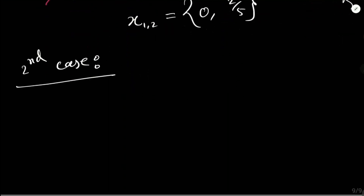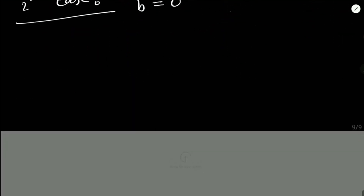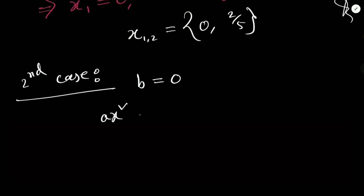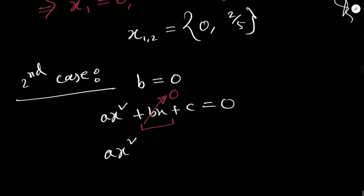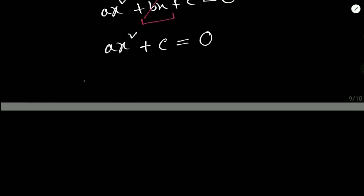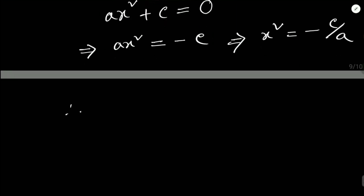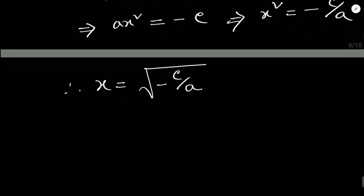Second case: if b = 0. Writing the equation as ax² + c = 0, the second term disappears. To find x: ax² = -c, so x² = -c/a, therefore x = ±√(-c/a). Memorize this shortcut for when b = 0.